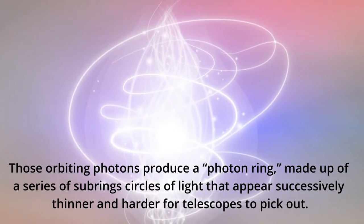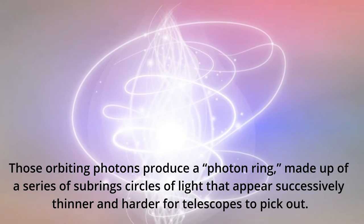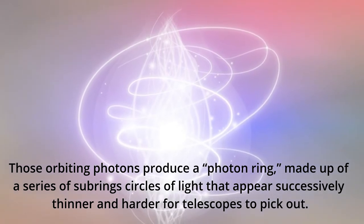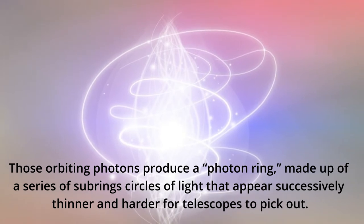Those orbiting photons produce a photon ring, made up of a series of subring circles of light that appear successively thinner and harder for telescopes to pick out.